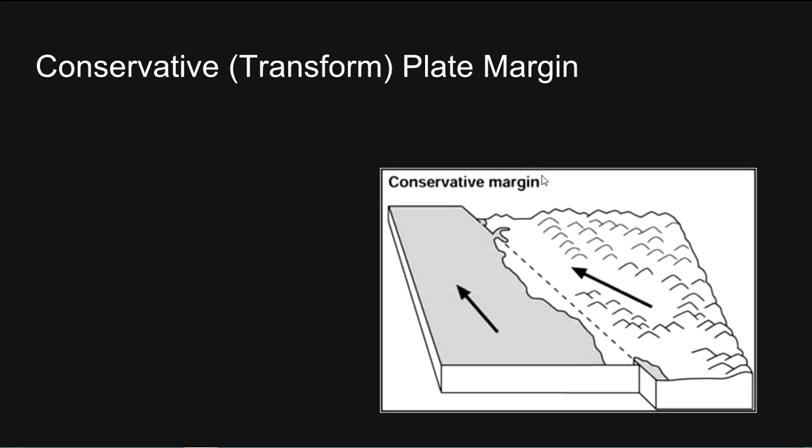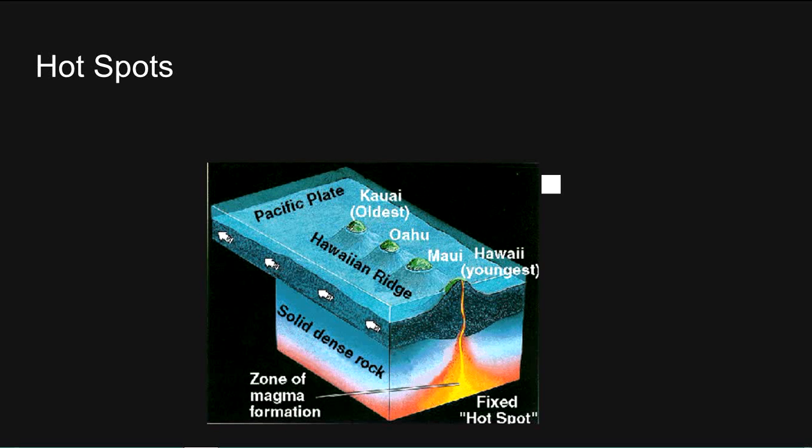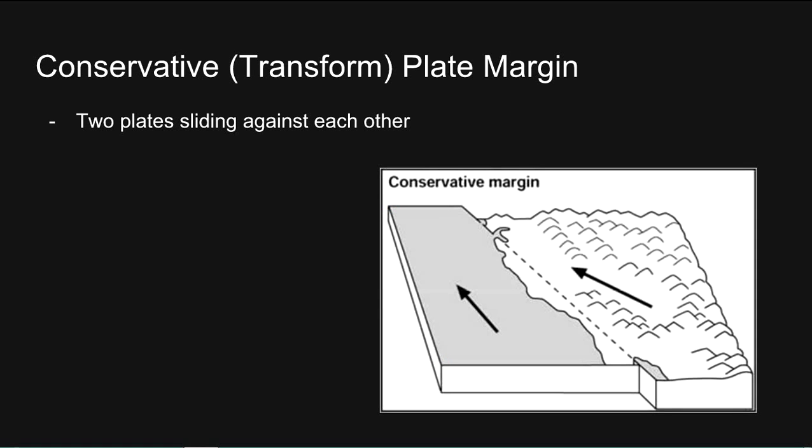At a conservative plate margin, two plates slide against each other. Movement can be quite violent and result in powerful earthquakes. An example is the San Andreas Fault, which is the boundary between the North American and Pacific plates. Earthquakes are frequent in Los Angeles and San Francisco because of this fault.